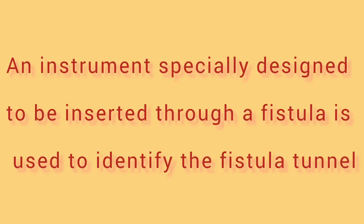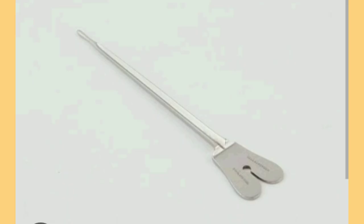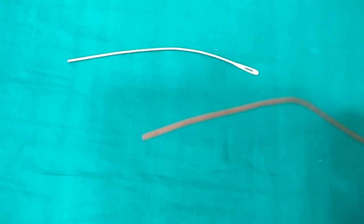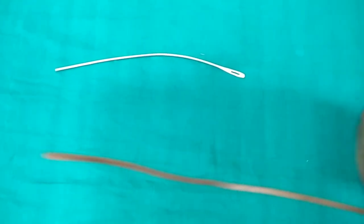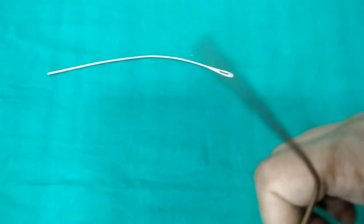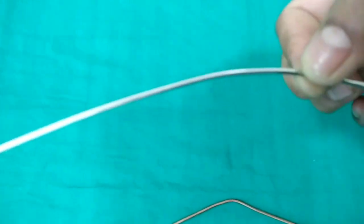This is a fistula director. It is a thin, long instrument with a winged end. Its tip is malleable and can be used both as a probe and as a director. It is used in operations for fissure and fistula in ano for tracing the track. It is used in external urethrotomy operations and also for tongue-tie operations.